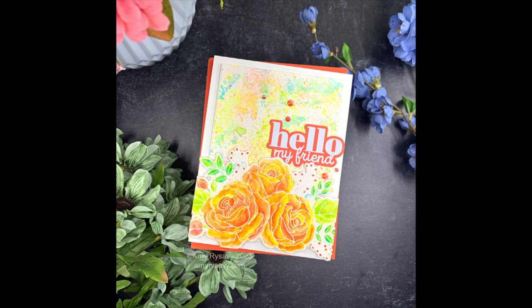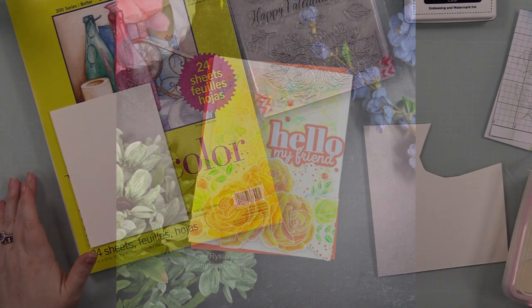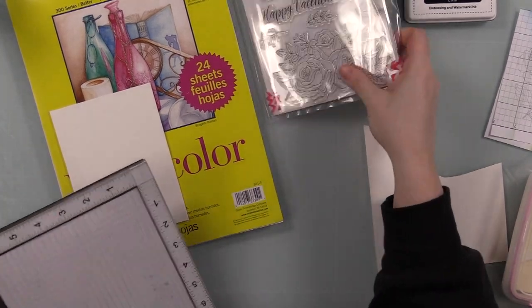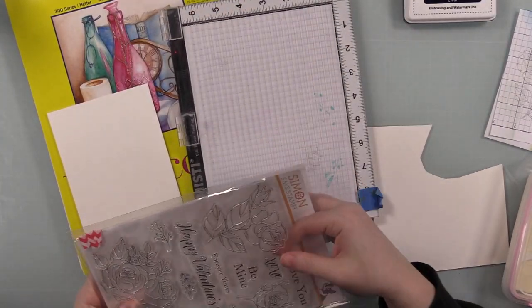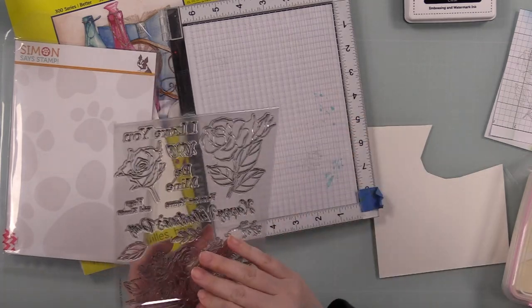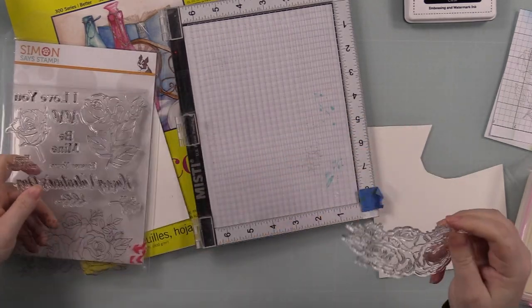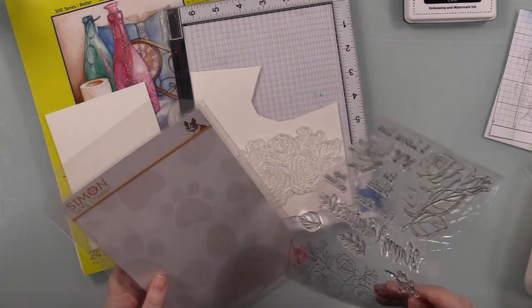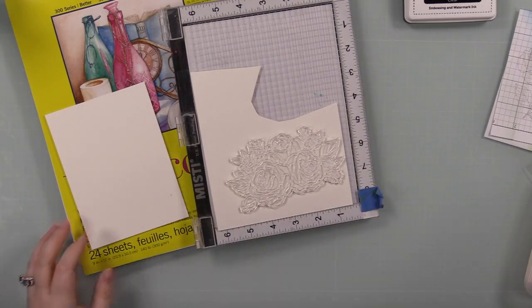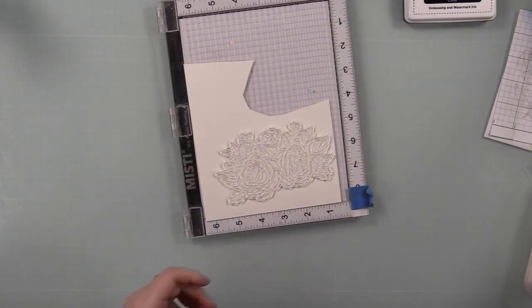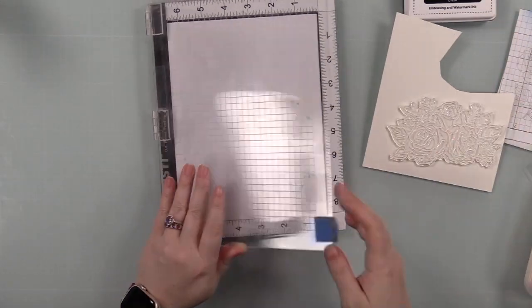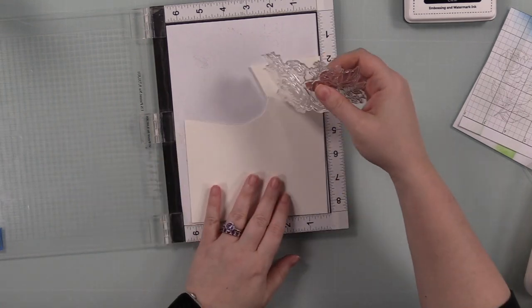Hello friends, Amy here with Prairie Paper and Ink with a pretty simple card using Karen brush marker pearls. I've been doing several videos with these lately and just having fun with them again. I pulled out the Forever Yours stamp set from Simon Says Stamp. I've already done one video using this set.